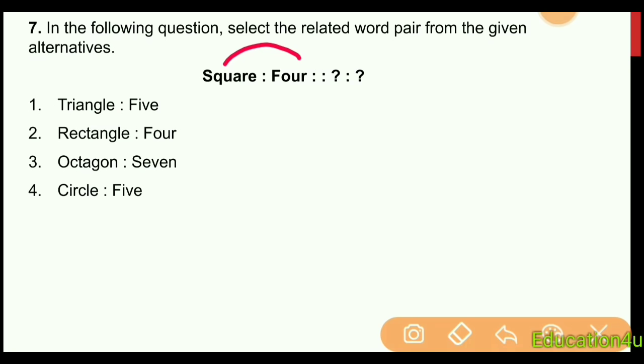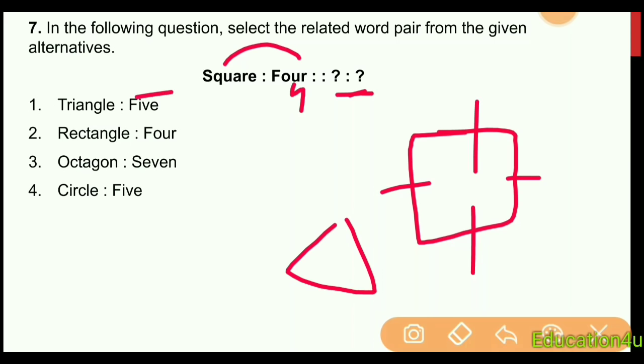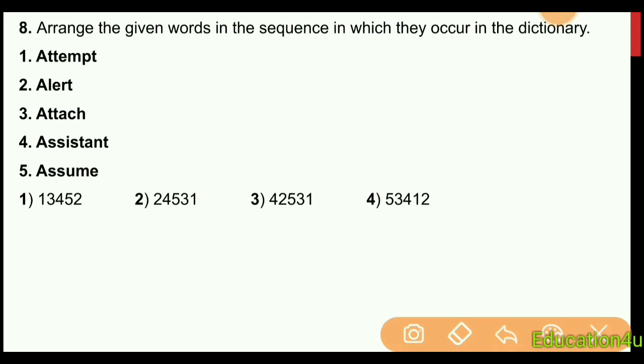For the shapes question, we have Square is to Four. A square has four sides, triangle has three sides, rectangle has four sides, octagon has seven sides, circle has five in some contexts. We need to match the pattern correctly based on the number of sides.